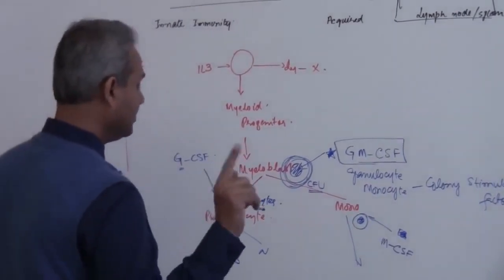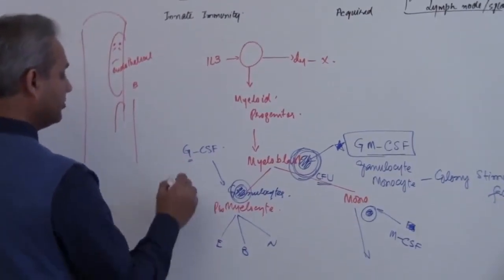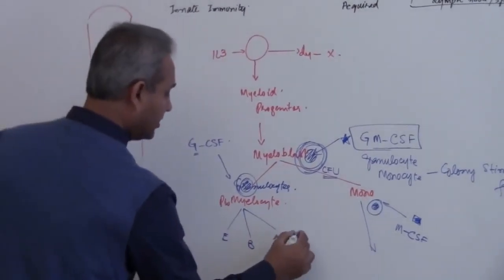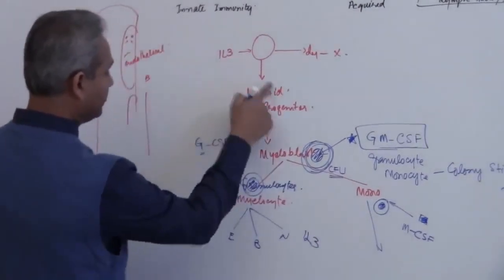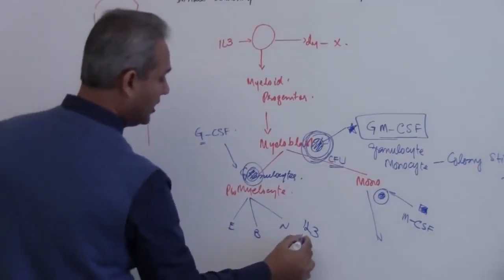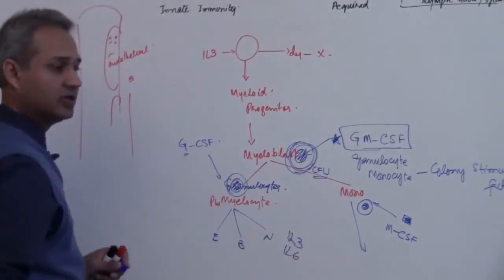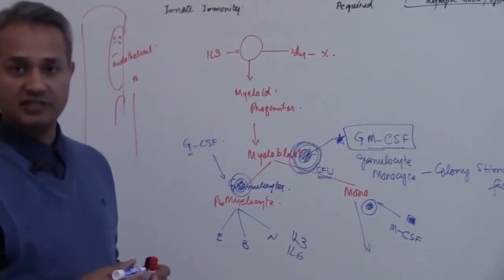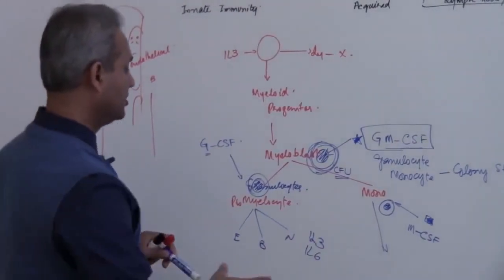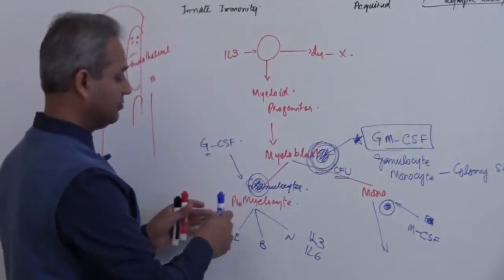Then remember this that we also have IL-3 which works here, works here as well. IL-6 that works here as well and then some other chemical substances as well which would work here to increase the population.